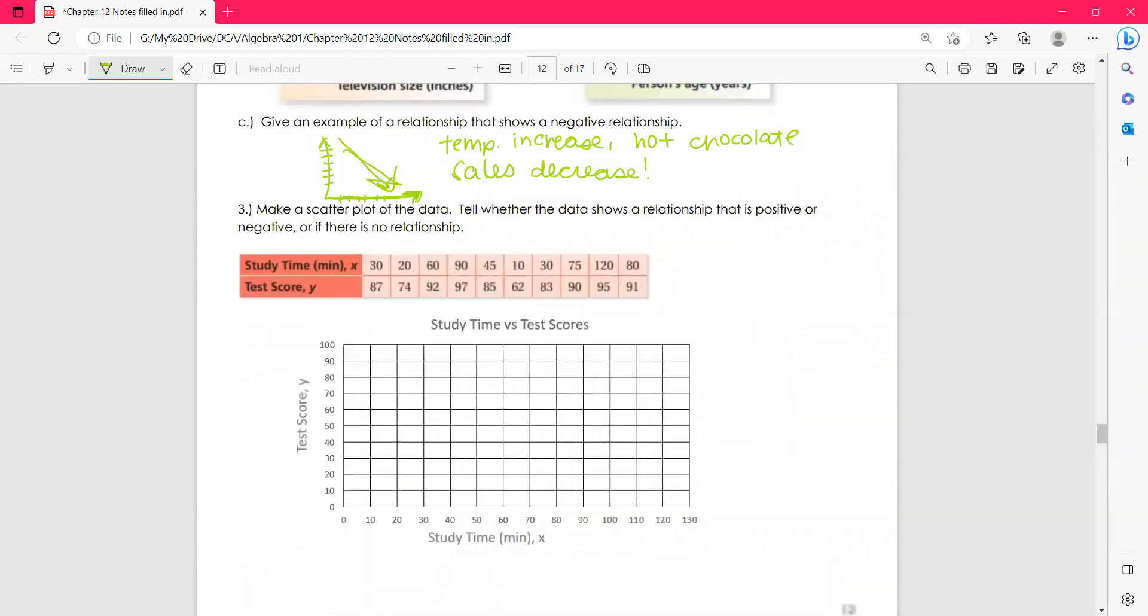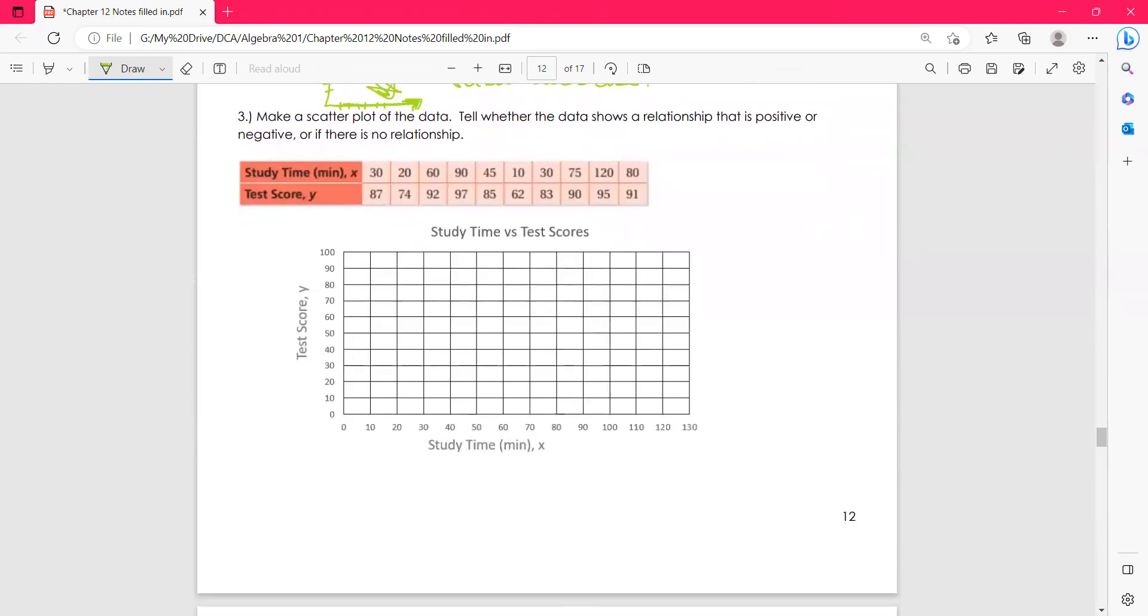Make a scatterplot of the data. Tell whether the data shows the relationship that is positive, negative, or no relationship. So we're going to plot these points. These are all points. So like this is 30 comma 87, 20 comma 74, 60 comma 92, 90 comma 97, 45 comma 85, 10 comma 62, 30 comma 83, 75 comma 90, 120 comma 95, and 80 comma 91.